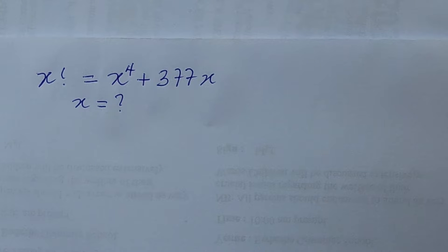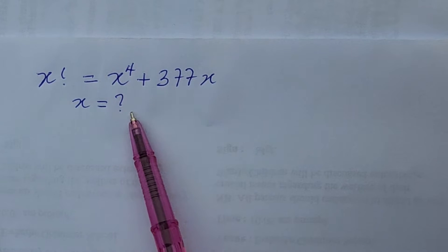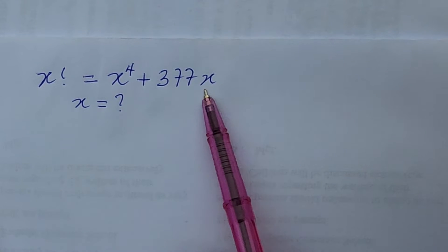Here before us we have a challenge. The question says x factorial is equal to x to the power of 4 plus 377x. What is the possible value of x? How do we solve for x?